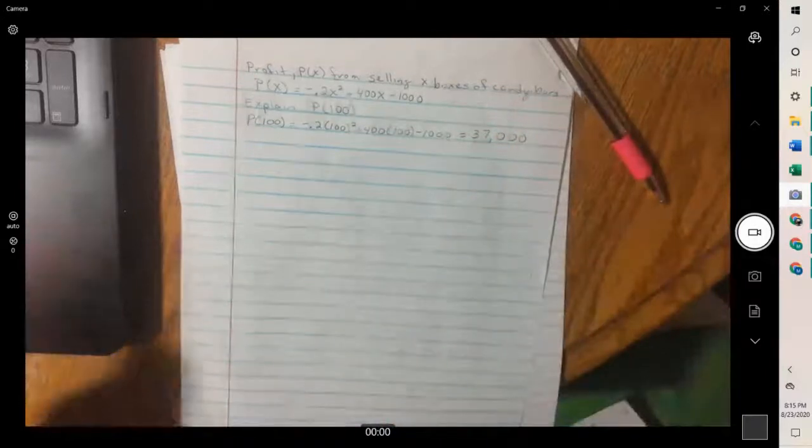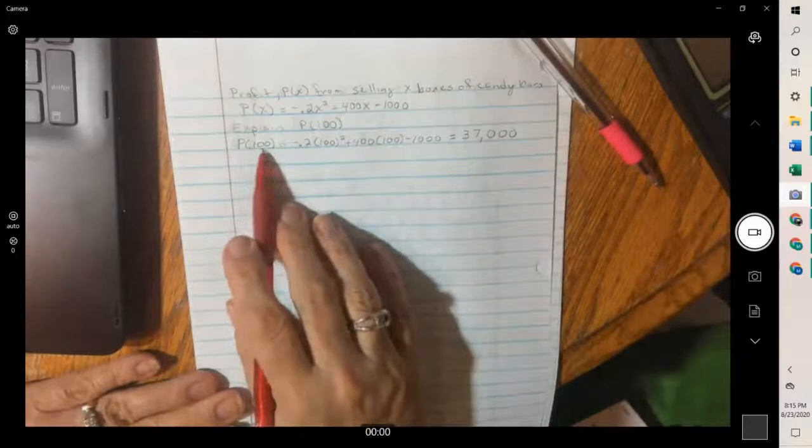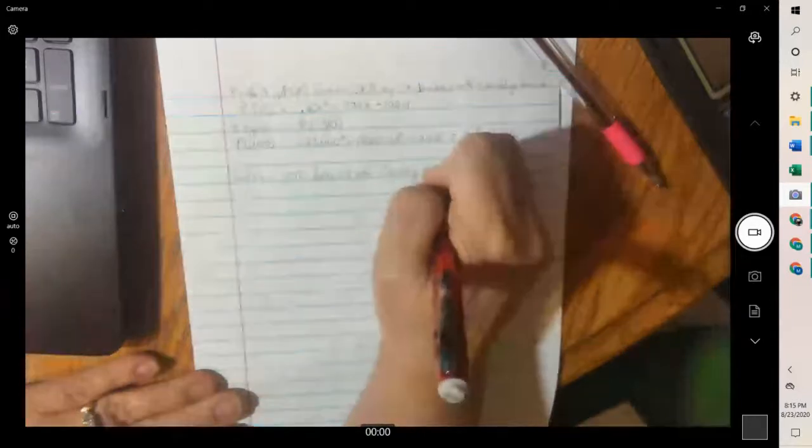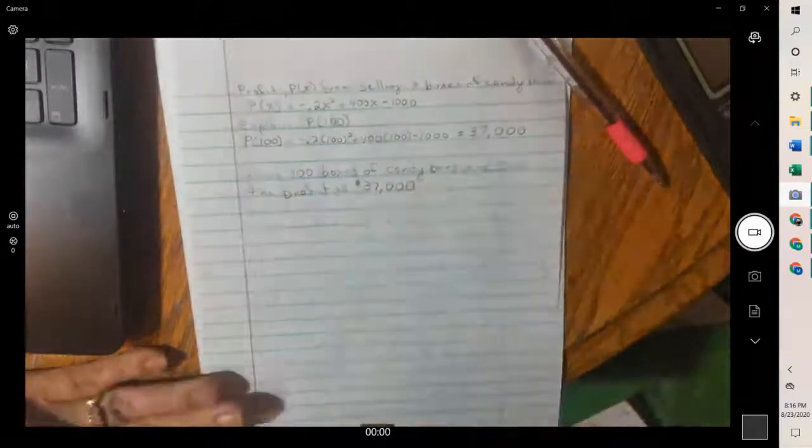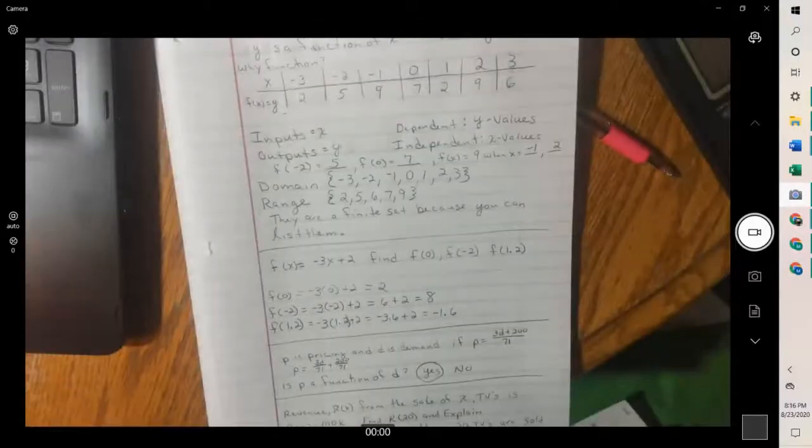So we get 37,000. But what does that mean? We need to be able to explain what these mean. So we're plugging in 100. And 100 is our x value. Go back in the equation and see what x was. Well x was boxes of candy bars. When 100 boxes of candy bars are sold, the P of x was profit. So this is $37,000. And that's everything in this section.